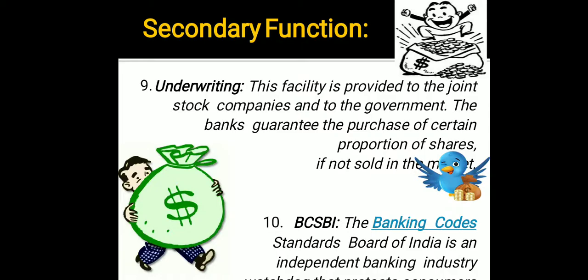The ninth secondary function is underwriting. In underwriting, the bank encashes your bills. For example, if your bill date is 9th December but you need the money on 9th September, the bank helps you encash it on 9th September.